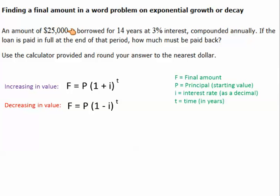It says an amount of $25,000 is borrowed for 14 years at 3% interest compounded annually. If the loan is paid in full at the end of that period, how much must be paid back? Use the calculator provided and round your answer to the nearest dollar.